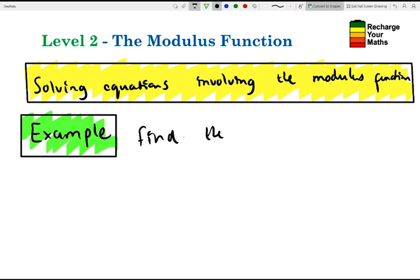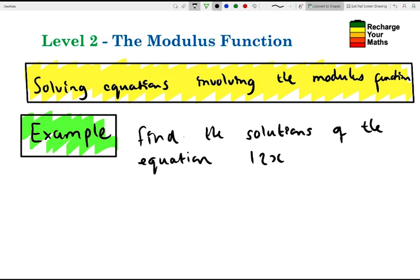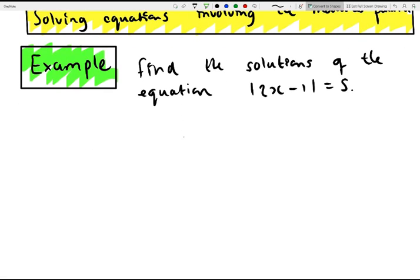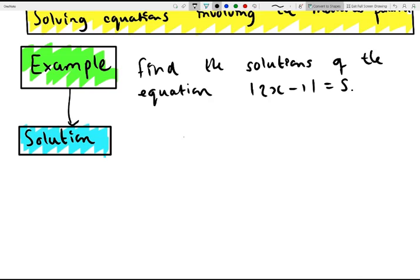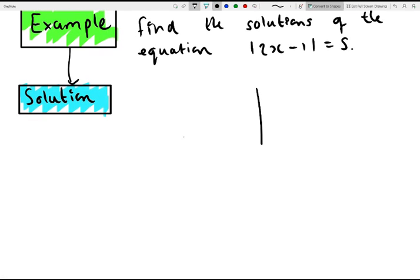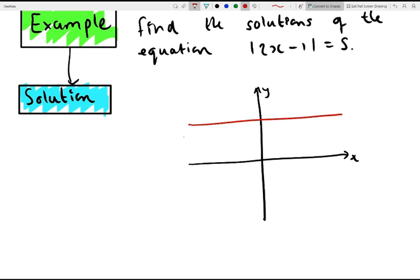Find the solutions of the equation: the modulus of 2x minus 1 is equal to 5. Our solution starts with drawing a quick graph. So these are our axes for x and y. Now let's first draw y equals 5, which is the right-hand side of that equation.